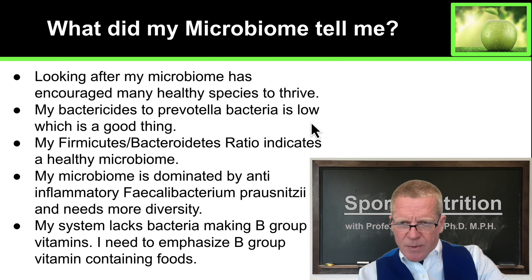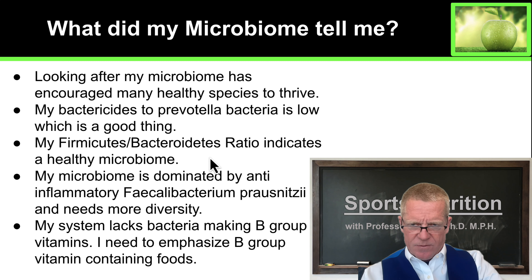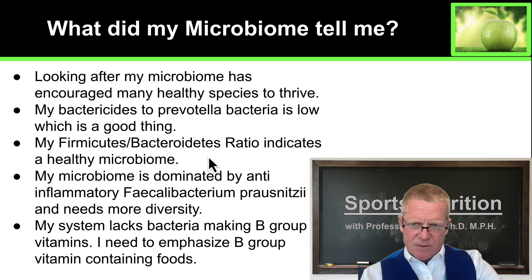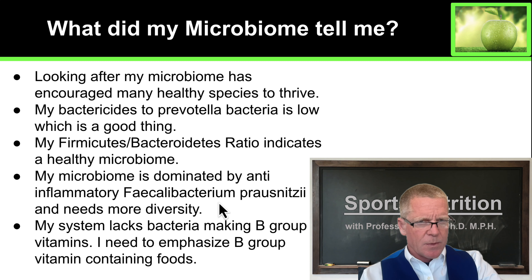So what did my report tell me? In general, I'm looking after my microbiome pretty well, allowing many healthy species to survive and thrive. My Bacteroides to Prevotella ratio is low, which is a good thing. My Firmicutes to Bacteroidetes ratio is low, which indicates a pretty healthy microbiome. However, my microbiome is dominated by Faecalibacterium prausnitzii, so my microbiome needs more diversity — that means I need to try to eat different kinds of fibers.